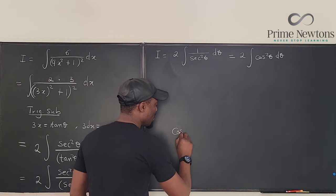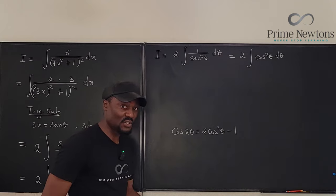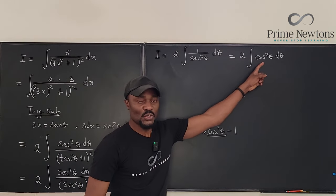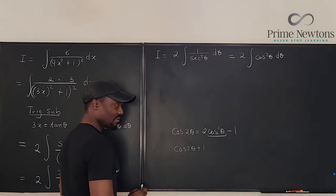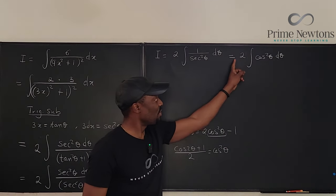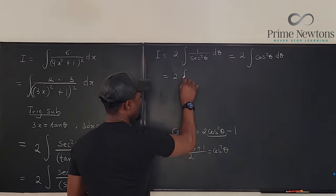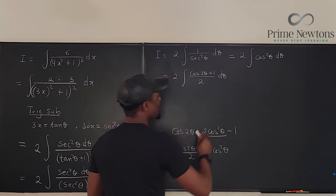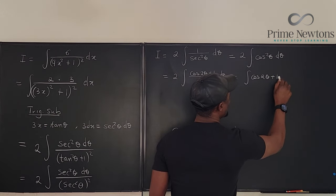So we know that cosine 2 theta is 2 cosine squared theta minus 1. This is an identity you learned in your trig class. So we can move this one here: cosine 2 theta plus 1, and then we can divide by 2. So we can write it this way: 2 times the integral of cosine 2 theta plus 1 divided by 2 d theta. These two cancels so that what we have is just the integral of cosine 2 theta plus 1 d theta.